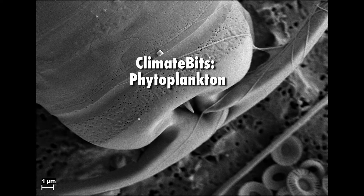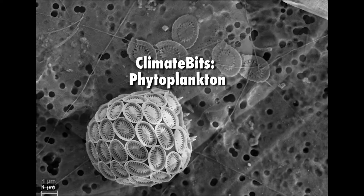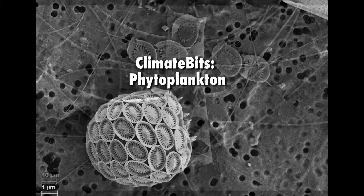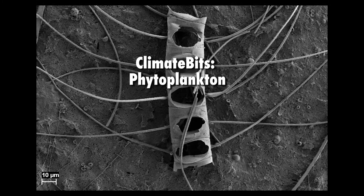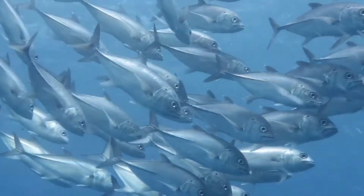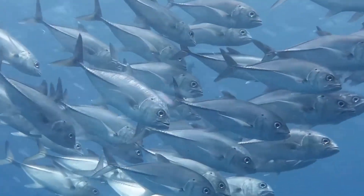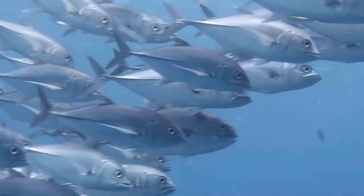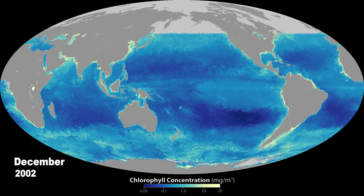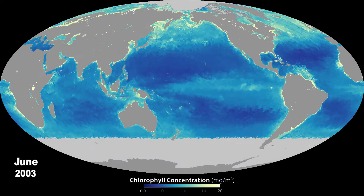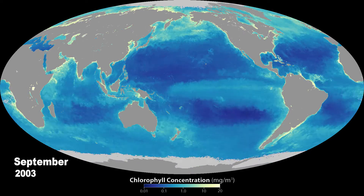Phytoplankton are microscopic organisms that are important for life on Earth as we know it today. Phytoplankton form the base of the marine food web and are responsible for about half of the oxygen on Earth. For the past 20 years, NASA has been monitoring these microscopic phytoplankton from space.